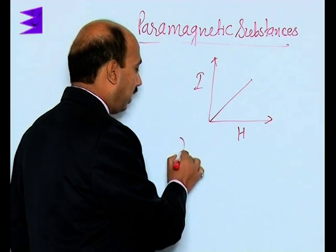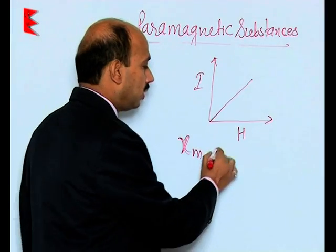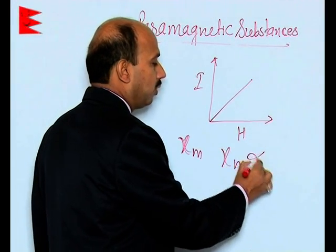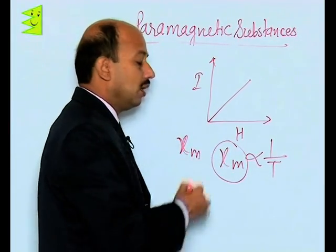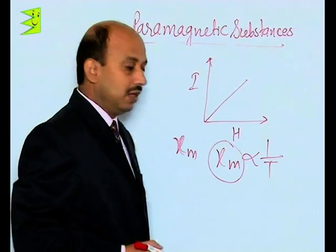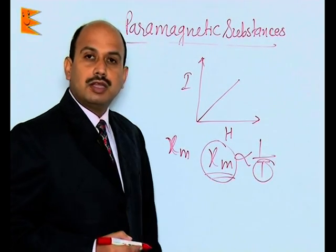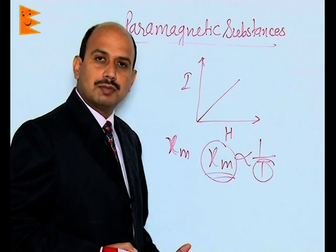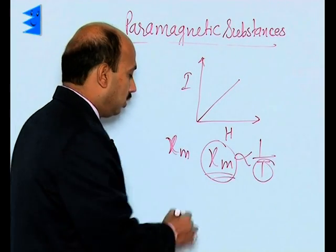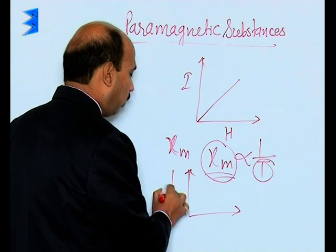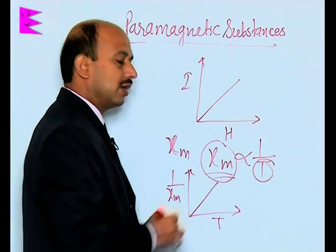Chi_m for paramagnetic substances depends on temperature — chi_m is inversely proportional to temperature. Chi_m is known as magnetic susceptibility. If you increase the temperature, susceptibility decreases. You can also draw the graph of 1 upon chi_m versus T, which will also be a straight line.